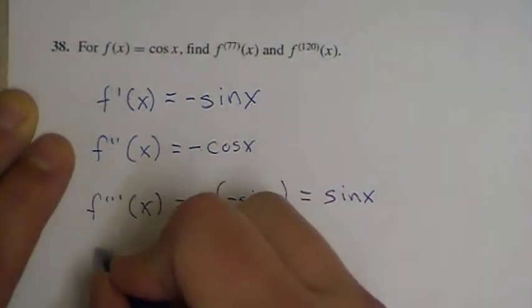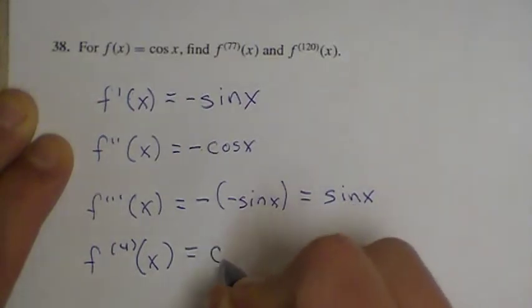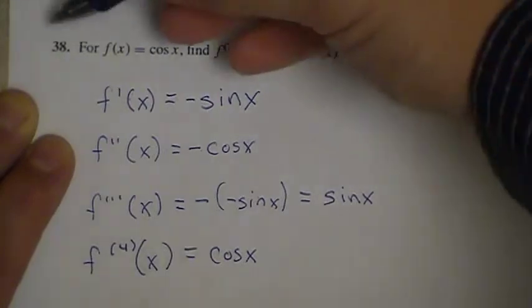And then a fourth derivative here, derivative of sine, would actually take us back to cosine. So we're back to the function.